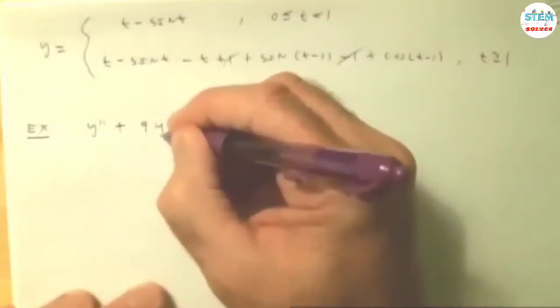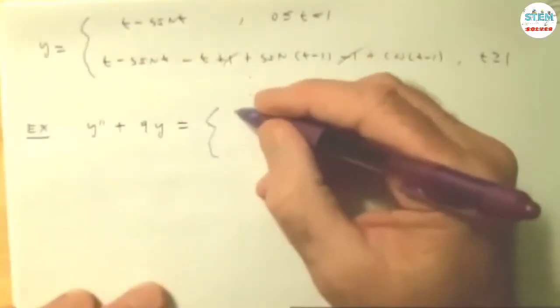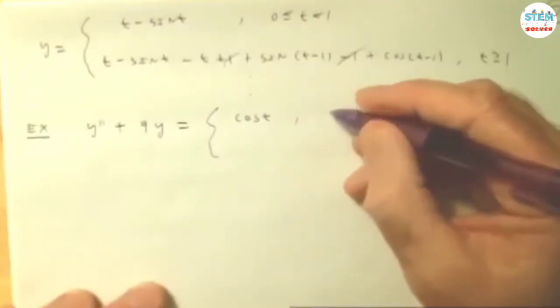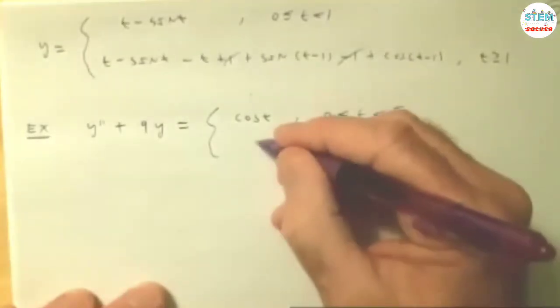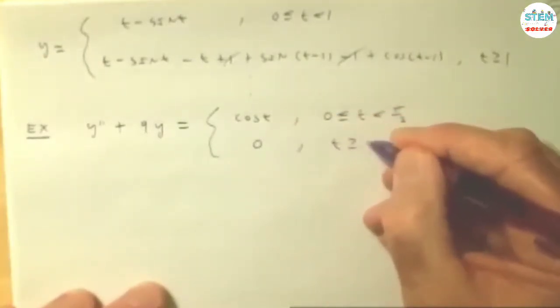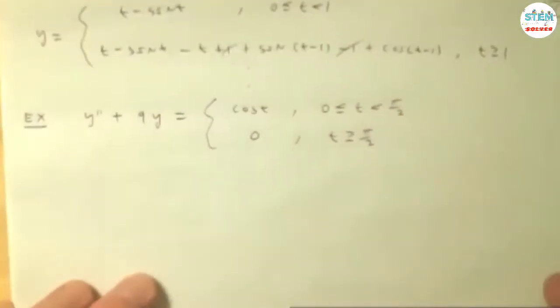Y double prime plus 9y is going to be cosine of t when t is between 0 and pi over 2, and 0 when t is greater than or equal to pi over 2. So essentially, we had it starting with cosine and we're going to switch cosine off at pi over 2.